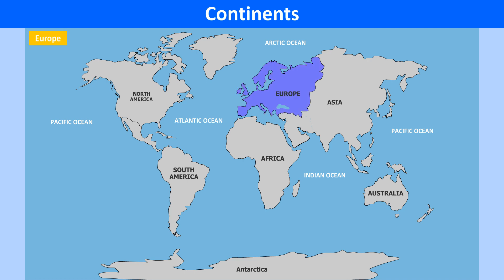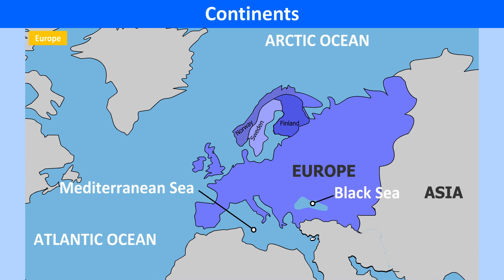Europe is the second smallest continent, covering about one-fifteenth of the Earth's land surface. It forms a continuous landmass with Asia, and together the two continents are called Eurasia. It is bounded by the Arctic Ocean in the north, the Atlantic Ocean in the west, the Mediterranean Sea and the Black Sea in the south. It has a very irregular coastline which extends to 38,000 km, and is marked by bays and fjords.